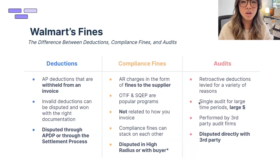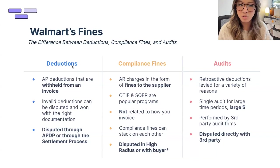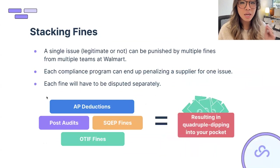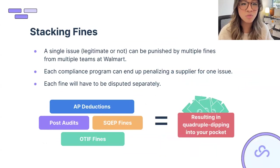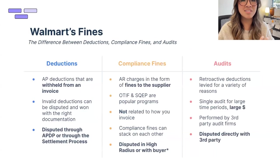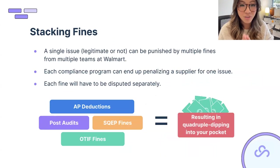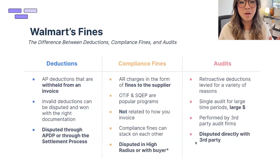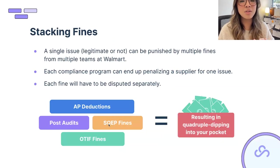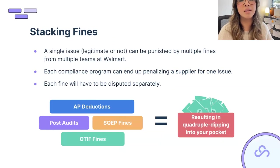One important thing to note: these fines can actually stack. You can get hit with an OTIF fine, a SQEP fine, a post-audit, and an AP deduction on a single PO. Not only do you have to fight it four times if you receive all four, but you also have to know where to go to fight each one. And none of them are interlinked — if you win the AP deduction, you still have to separately fight the OTIF fine, and vice versa.